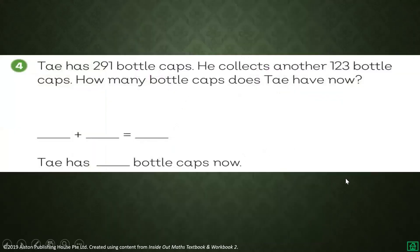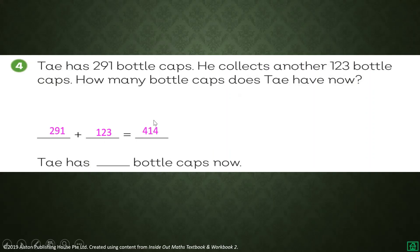Number 4. Tay has 291 bottle cups. He collects another 123 bottle cups. How many bottle cups does Tay have now? 291 plus 123: 1 plus 3 equals 4, 9 plus 2 equals 11 carry 1, 1 plus 2 plus 1 equals 4. So Tay has 414 bottle cups.